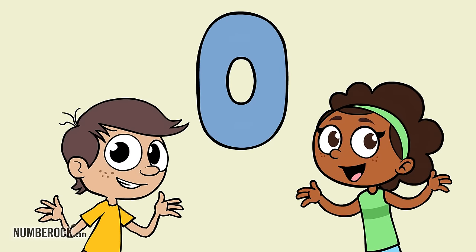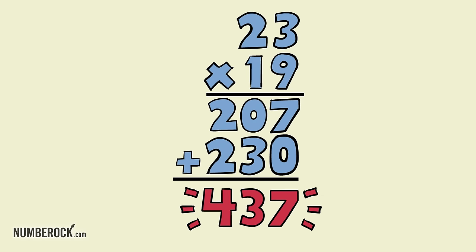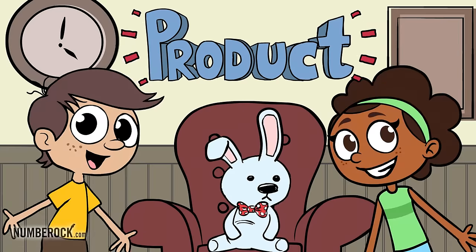We need to add a zero when we multiply the tens. Add the numbers up, and that's the product.